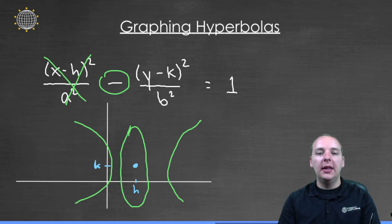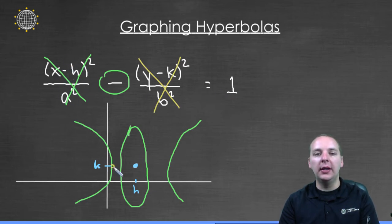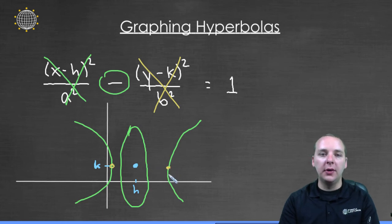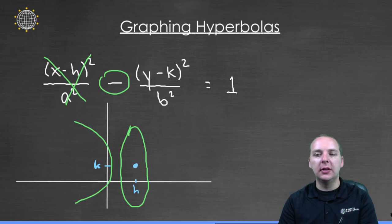But on the other hand, if y was equal to k and this term was zero, then you could easily choose x values to make this ratio equal one. Namely those would be your vertices of course.